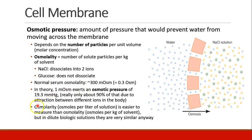Osmolarity is osmoles per liter of solution — that's usually how we think about concentrations, looking at the volume being the entire solution, not just the solvent. It turns out it's easier to measure osmolarity than osmolality, but in dilute biologic solutions they're very similar, so these terms can be used almost interchangeably when discussing human physiology.